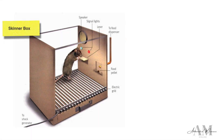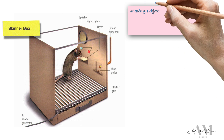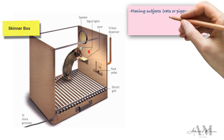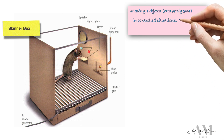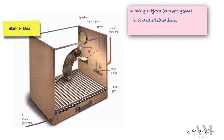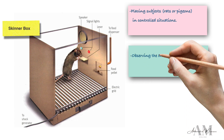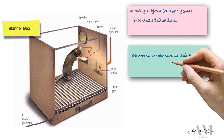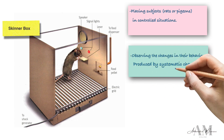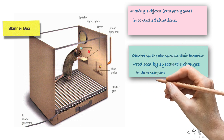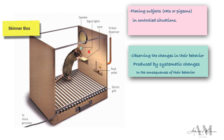Skinner gained widespread recognition for his development and use of the Skinner box, also known as an operant conditioning chamber. This device was designed to study the principles of operant conditioning and to analyze how different types of stimuli and consequences affect behavior. In the early Skinner box experiments, a rat was placed inside the box.